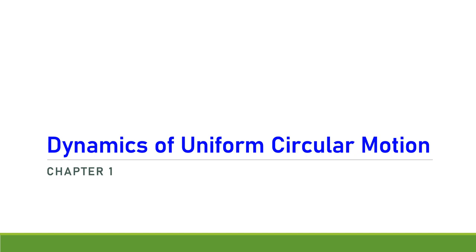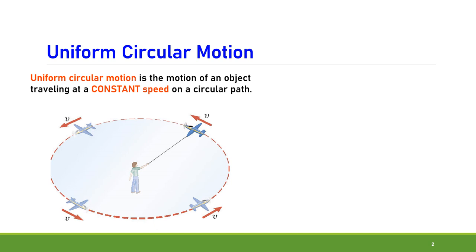Here we study the dynamics of uniform circular motion. Uniform circular motion is the motion of an object traveling at a constant or uniform speed on a circular path. As an example, the figure shows a model plane on a guideline. The speed of the plane is the magnitude of the velocity vector, and since the speed is constant, the vectors in the drawing have the same magnitude at all points on the circle.